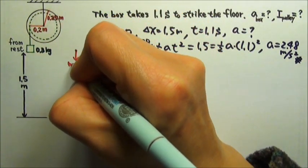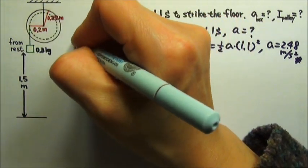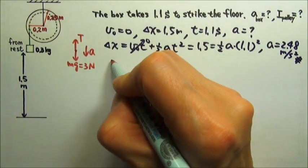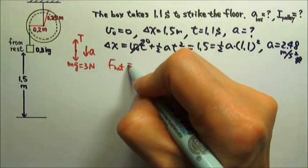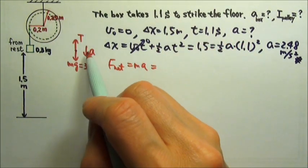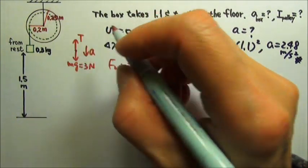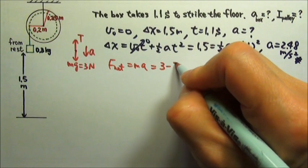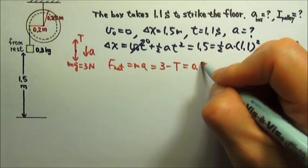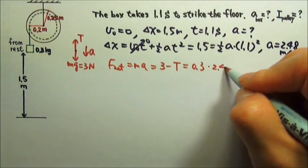There are two forces acting on the box. There's the mg, which is 3 newtons, and the box is touching the string, which gives the tension. If we write net force equals ma for the box, we would have the net force as the downward force minus the upward force: 3 - T = ma. The mass is 0.3, and the acceleration we just found is 2.48.